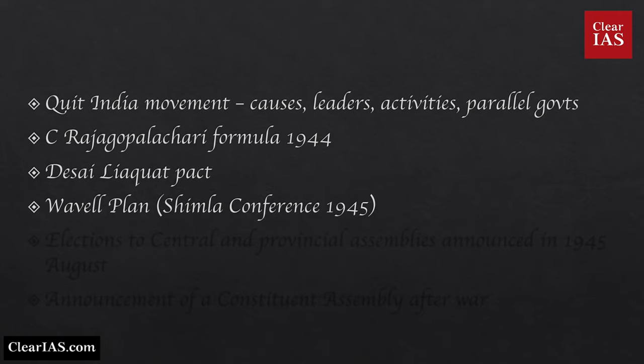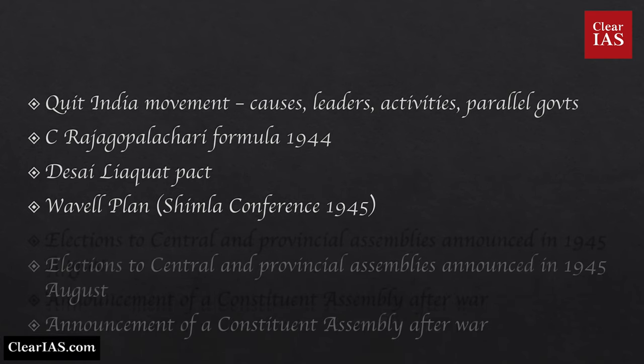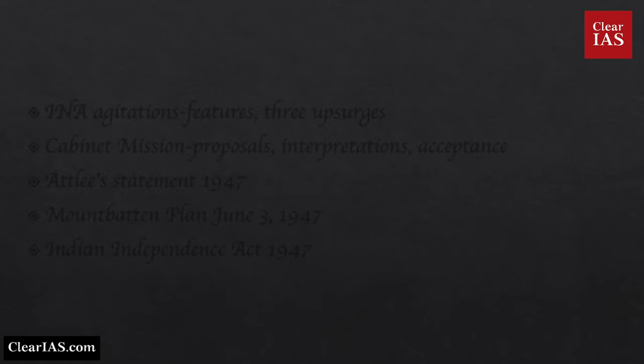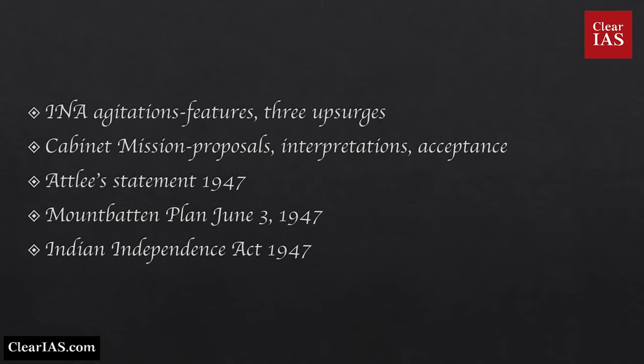Then learn about the Rajagopalachari Formula of 1944, Desai-Liaquat Pact, Wavell Plan, elections to Central and Provincial Assemblies announced in August 1945, announcement of a Constituent Assembly after the war, INA agitations and three upsurges, proposals and acceptance of the Cabinet Mission Plan, Attlee's Statement of 1947, Mountbatten Plan of June 3rd 1947, and finally the Indian Independence Act of 1947.